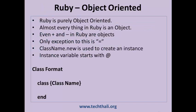Ruby is a pure object oriented language. Almost everything in Ruby is an object. Even plus and minus signs are objects in Ruby. The equal symbol is not an object and is the only exception. To create a new instance of a class, use the new operator. The instance variable of a class has the prefix @.